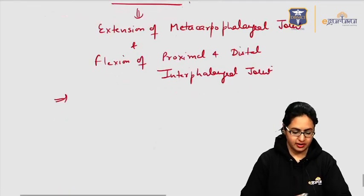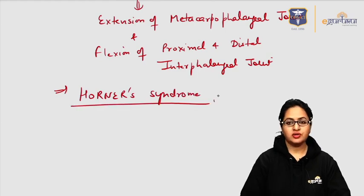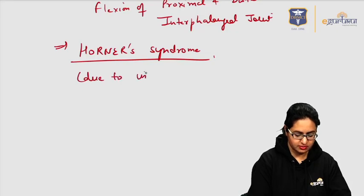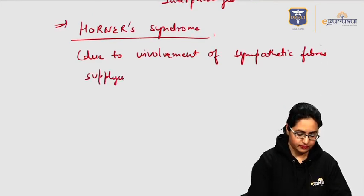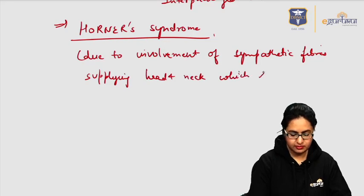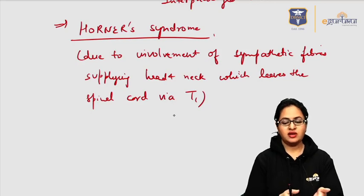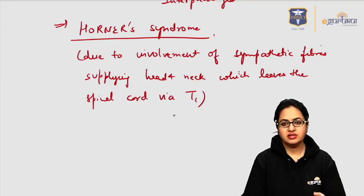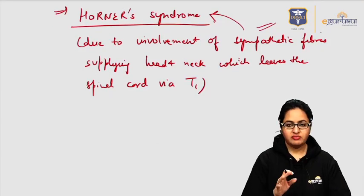Apart from the claw hand deformity, another aspect seen in Klumpke's palsy is Horner's syndrome. This Horner's syndrome is due to the involvement of sympathetic fibers supplying the head and neck region, which pass through T1 — which leave the spinal cord via T1. Since C8 and T1 are involved, mainly T1, the sympathetic fibers passing through T1 supplying the head and neck area are also affected, leading to Horner's syndrome.